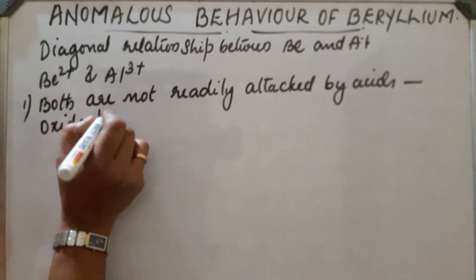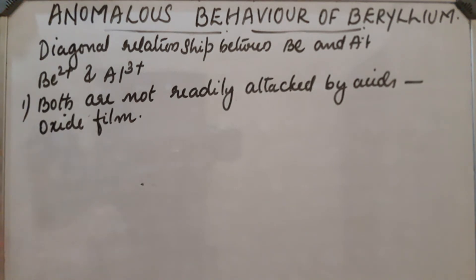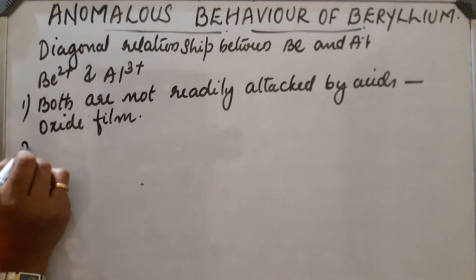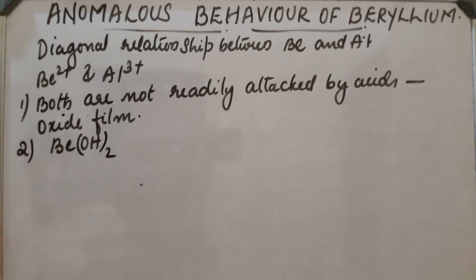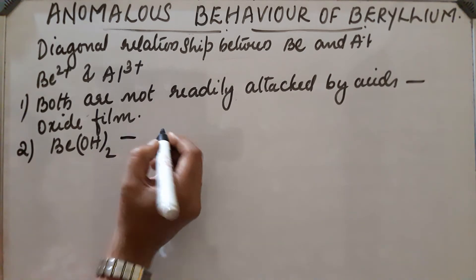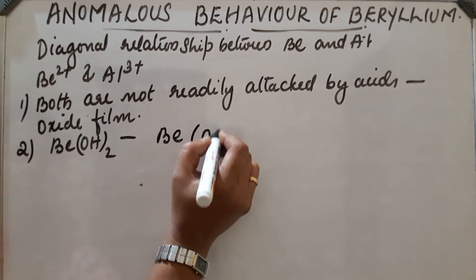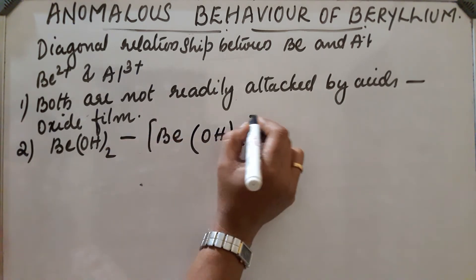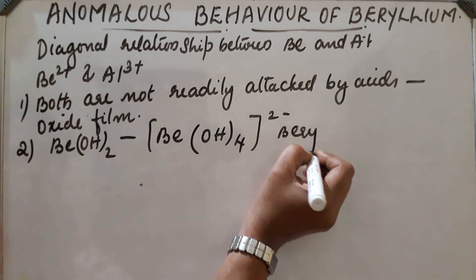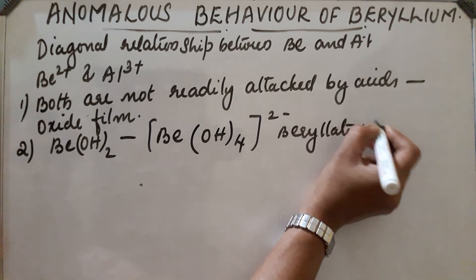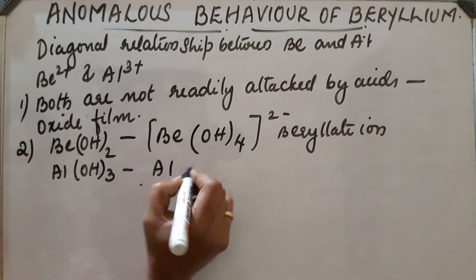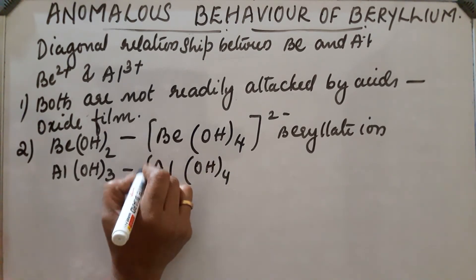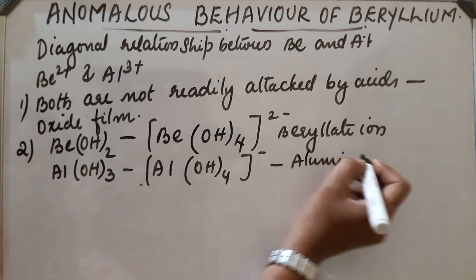Second similarity: beryllium hydroxide Be(OH)₂ dissolves in excess alkali to form the beryllate ion Be(OH)₄²⁻. Similarly, aluminium hydroxide Al(OH)₃ dissolves to form the aluminate ion Al(OH)₄⁻.